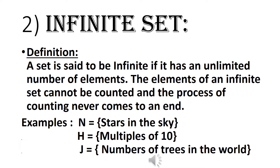Infinite set: A set is said to be infinite if it has an unlimited number of elements. The elements of an infinite set cannot be counted and the process of counting never comes to an end. Example 1: N = stars in the sky — we cannot count stars, so it is an infinite set. Example 2: Multiples of 10 — multiples go on indefinitely, so you cannot say from which number to stop, making it an infinite set.